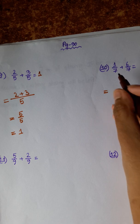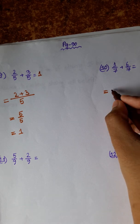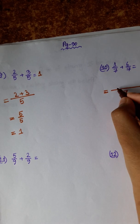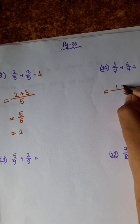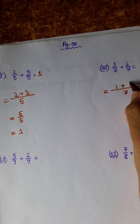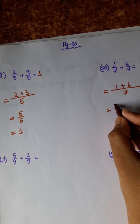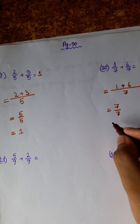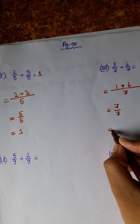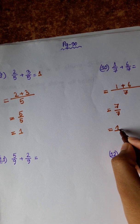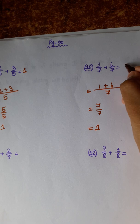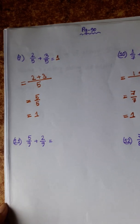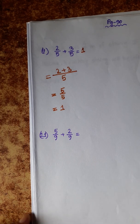Next: 1 by 7 plus 6 by 7. Denominator same. Numerator: 1 plus 6 equals 7. So 7 by 7, which simplifies to 1.